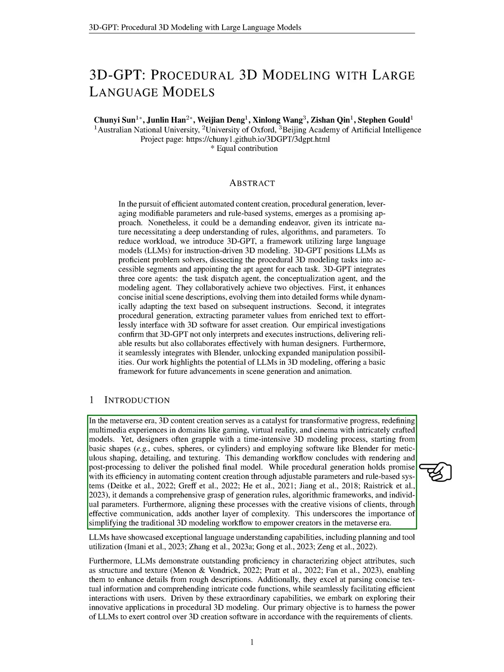This labor-intensive process ends with rendering and post-processing to produce the final polished model. While procedural generation, which automates content creation through adjustable parameters and rule-based systems, offers a promising solution, it requires a deep understanding of generation rules, algorithmic frameworks, and individual parameters. Moreover, aligning these processes with the creative visions of clients through effective communication adds another layer of complexity, highlighting the need to simplify the traditional 3D modeling workflow to empower creators in the metaverse era.